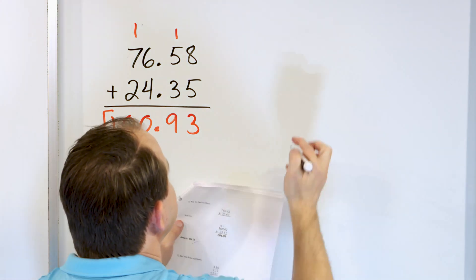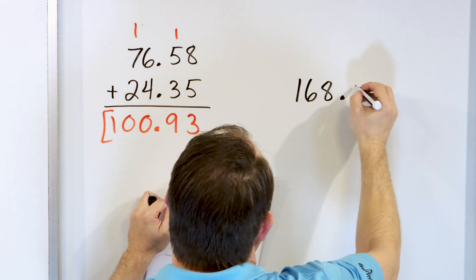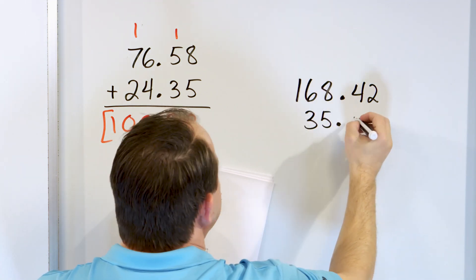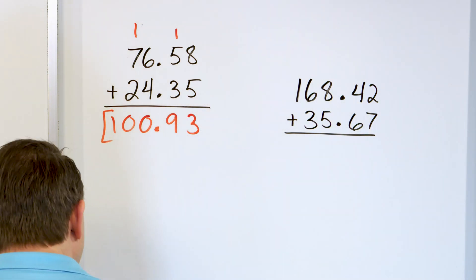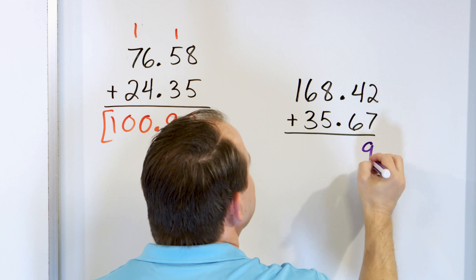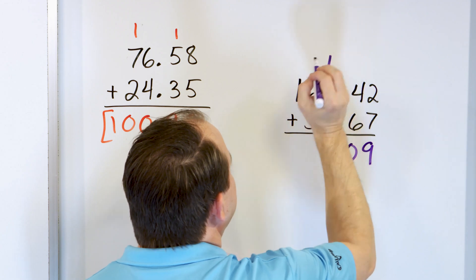Next problem. Let's take a look. 168 decimal 4, 2. And we'll add to that 3, 5 decimal 6, 7. What do we have? Right-hand column. 7, 8, 9. Put a 9 right here. 6 and 4, we know make 10. They're complements. They make 10. So, we put a 0. Carry.